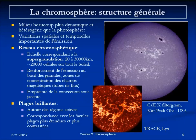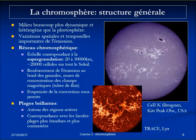Mainly around active regions you have bright plages, and near the limb these correspond to faculae. In the photosphere the radiation field was anisotropic because of the evacuation in intergranular space. But in the chromosphere, which is highly transparent, the radiation field is completely homogeneous, so you can see those bright features over the whole disk.